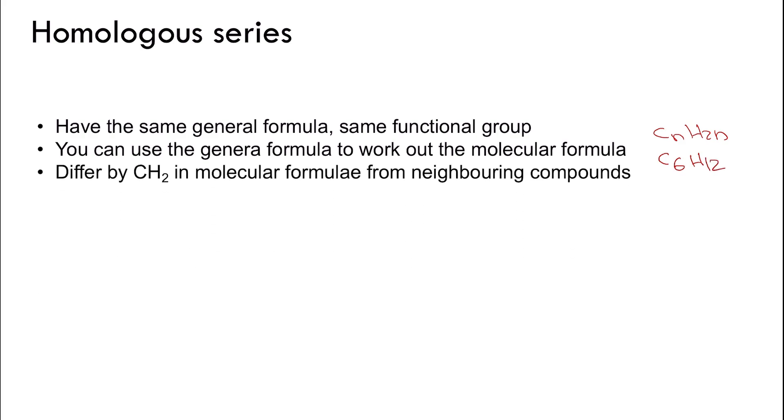The different members of the homologous series will differ only by CH2 in their molecular formula from the neighboring compound. So for example, if you have hexene, for propene, for pentene it's C5H10, you can see that they differ from each other by CH2.